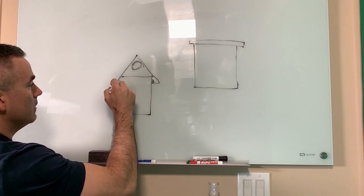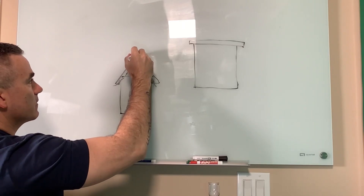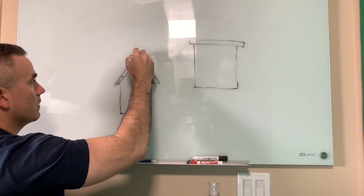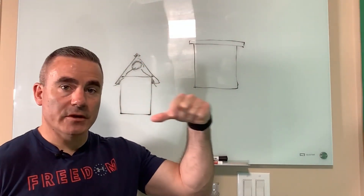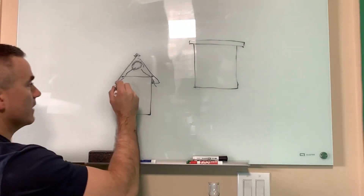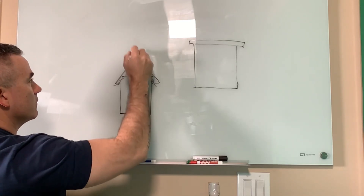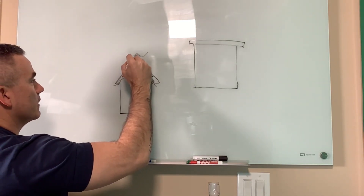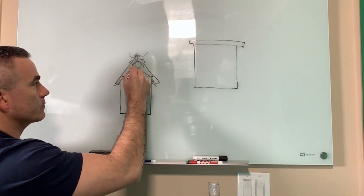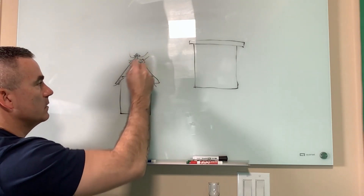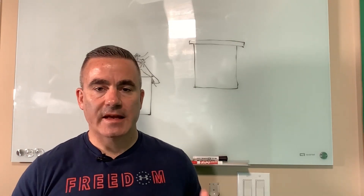As air comes in through the sides, it needs to go out somewhere. So you'll see sometimes on the ridgeline they have these shingles on top that are kind of elevated — those are actually vents. As air comes in, the moisture and hot air come up and escape out the vent. Sometimes you might see little square things on the side, and those do the same thing as the ridgeline vents. Air comes out, allowing the moisture to escape so you don't have moisture just hanging out in there.